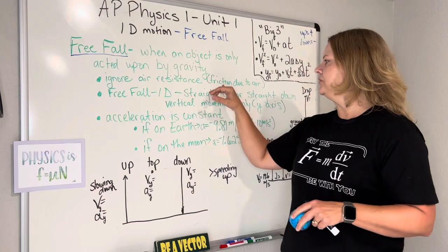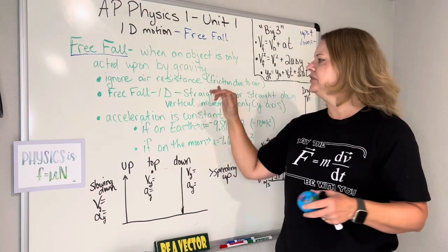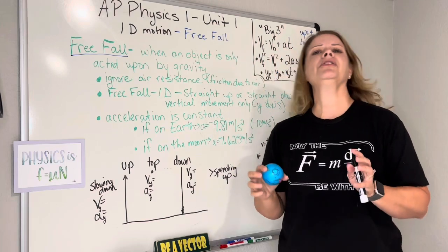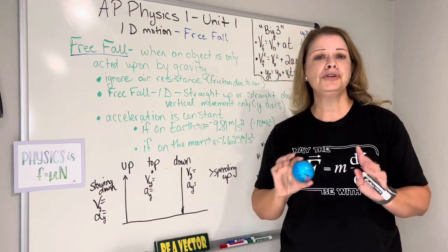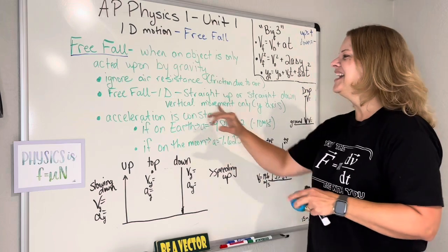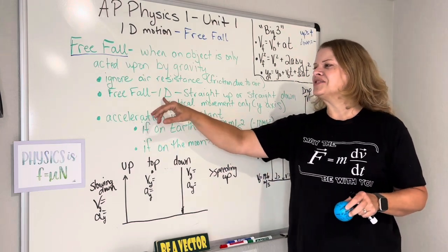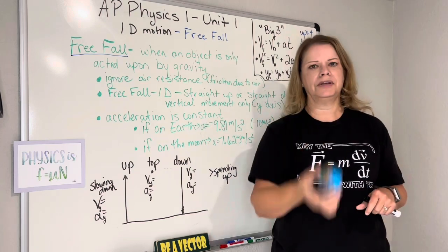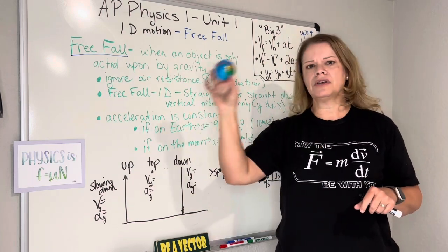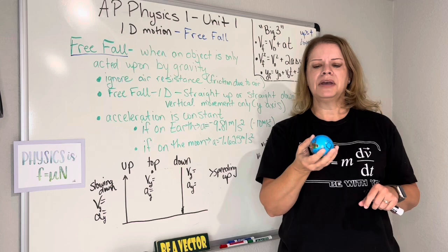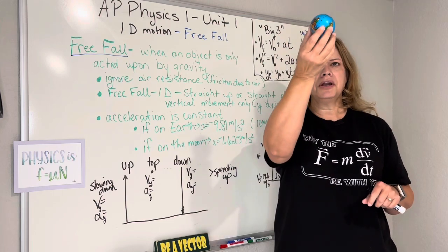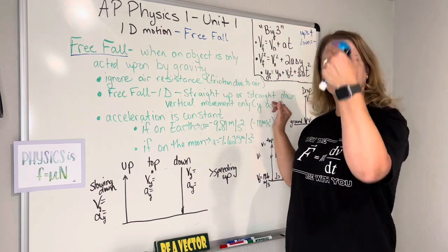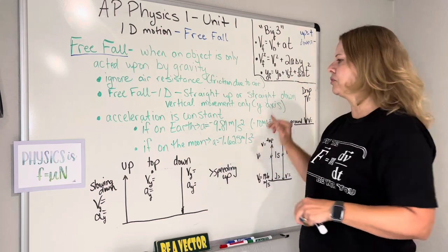We're going to ignore air resistance — that's friction due to air. In other words, we're living in this happy bubble of free fall where there is no air. Free fall is also 1D, meaning that this ball is only moving vertically. It's not moving in a horizontal component yet — just straight up or straight down, on what you'd consider the y-axis on a graph.